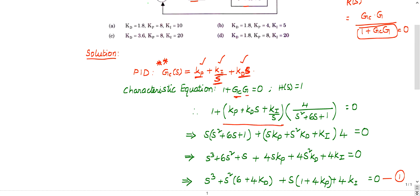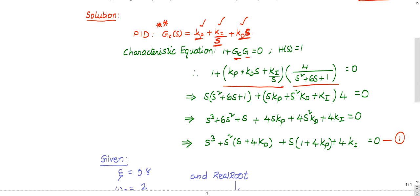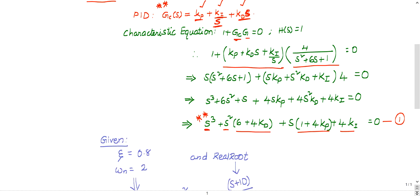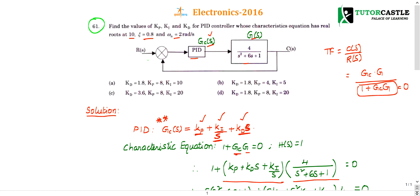Substituting the transfer functions for Gc and G and simplifying — taking the LCM and combining terms — the characteristic equation becomes: s³ + (6 + 4Kd)s² + (1 + 4Kp)s + 4Ki = 0.